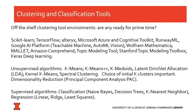We looked at a number of off-the-shelf clustering environments to determine if any of them are really ready to be used literally off the shelf. We've been focusing a lot on Scikit-learn, the Microsoft Azure Cognitive Services Toolkit, the Google platform, and Wolfram Mathematica. Amazon Comprehend — we've had a project or two with that. We also try to test particular algorithms: k-means, k-means plus, LDA, and spectral clustering for phrases.